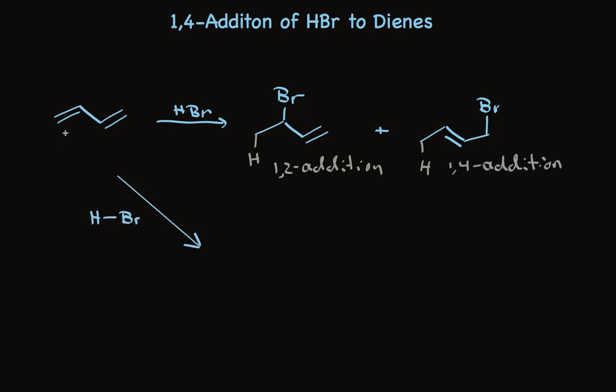So using our arrow pushing, we picture a pair of these pi electrons being used to form a bond with this proton, and this pair of electrons stays with bromine to form bromide. This forms an allylic carbocation, which is resonance stabilized. We picture this pair of pi electrons moving over here to leave a positive charge on the end carbon.